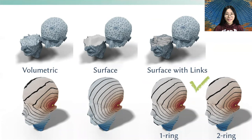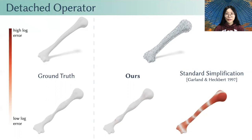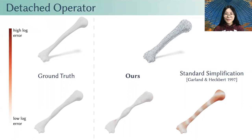Our approach enables users to have one mesh for visualization and a separate detached operator for computation. For example, we can approximate the vibration modes of a ground-truth high-resolution mesh using a coarse mesh with only 250 vertices, visualized as a transparent cage. The standard simplification scheme, which is designed to preserve appearance, fails to preserve spectral properties. Using the same coarse mesh obtained by standard simplification but with an optimized operator, we can now have both an appearance-preserving coarse mesh for visualization and collision detection, and a spectrally-preserving operator optimized for computation.